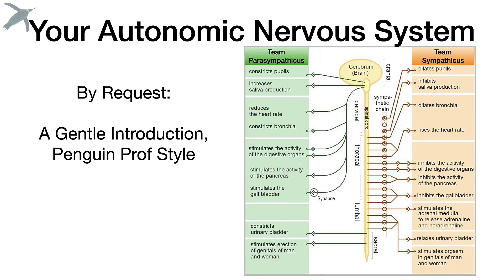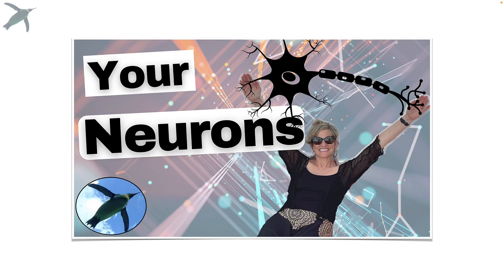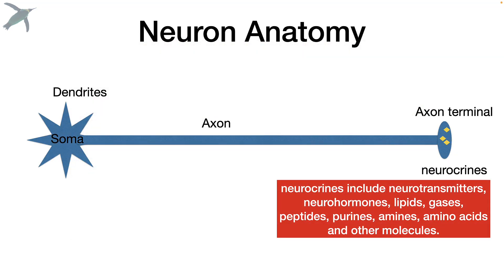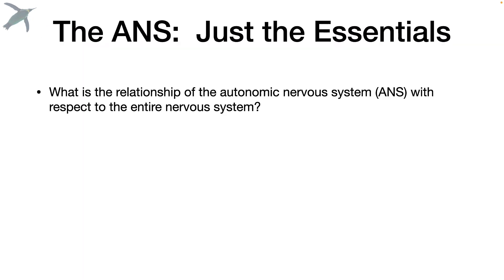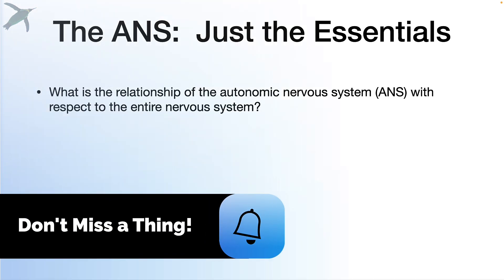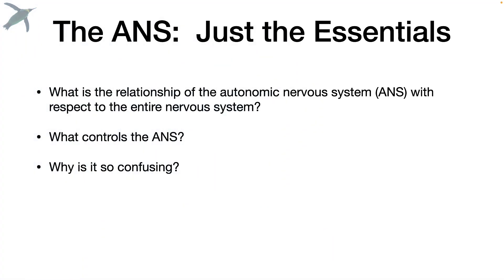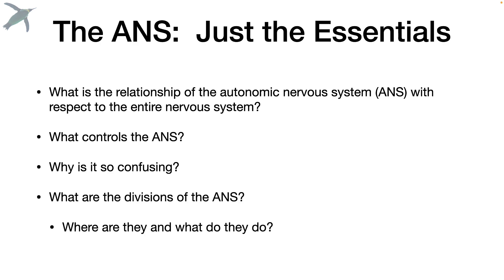This will be the essentials of your autonomic nervous system. I am assuming some general knowledge here — that you know the structure of a neuron and that you're familiar with the term neurocrine, which includes neurotransmitters as well as some other molecules. In this video, I want to talk about the relationship of the ANS with respect to the entire nervous system: how does it fit, what controls it, why is it so confusing, and what are the divisions?